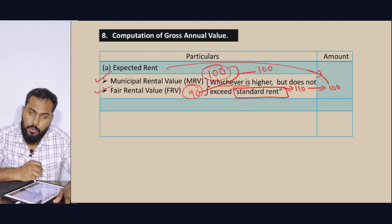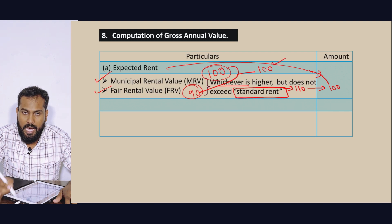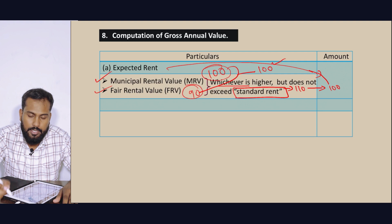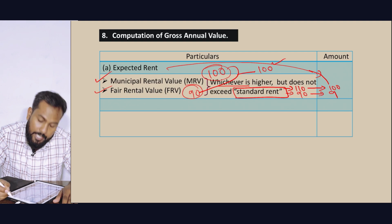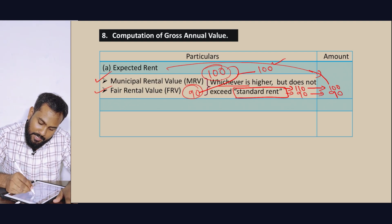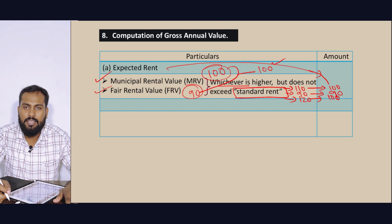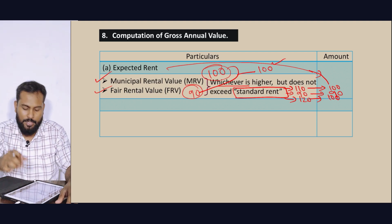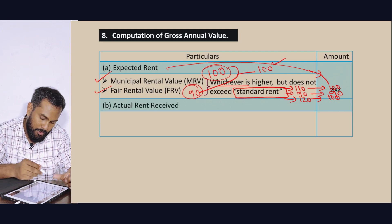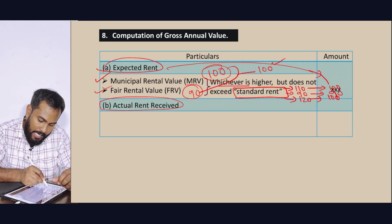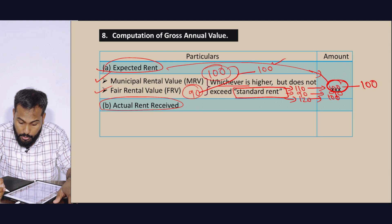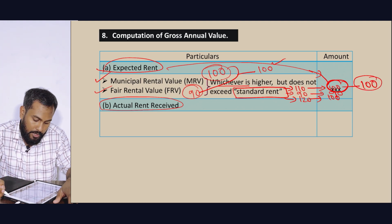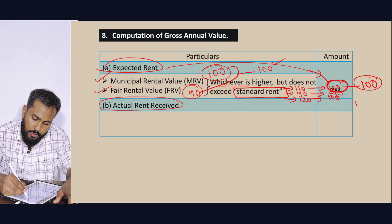Municipal value and Fair Rent Value is 100 — which one is higher? That is 100. Expected rent, standard rent — we'll give you an example. What we expected here is the actual rent. You can give 100. That's right.